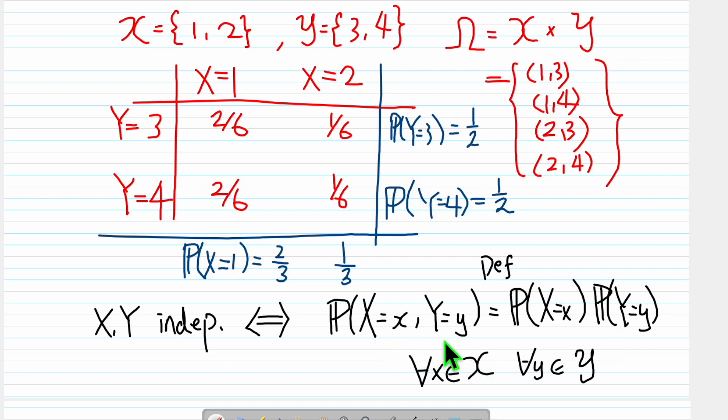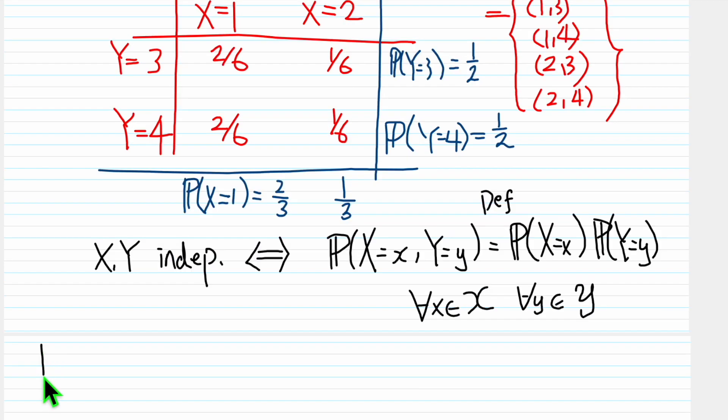So that means we are going to check, is this true for all the possible (x,y)? So, is P(X=1, Y=3) equal—this is question mark—to P(X=1) times P(Y=3)?